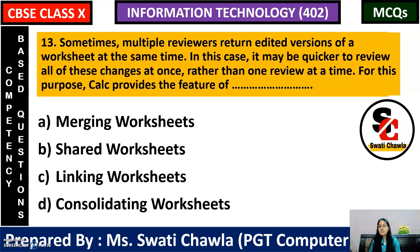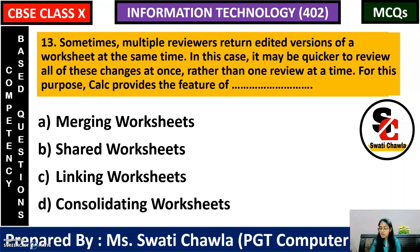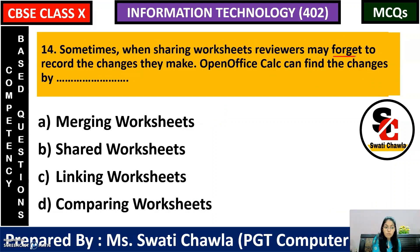Next: Sometimes multiple reviewers return edited versions of a worksheet at the same time. When you share your worksheet, reviewers have two options: they can turn on the track changes or record mode option, or they may forget to enable it. If they have turned on record changes, the concept applied is merging worksheet. But if they forgot to turn on record changes, then at that time you will use the option of comparing worksheet.